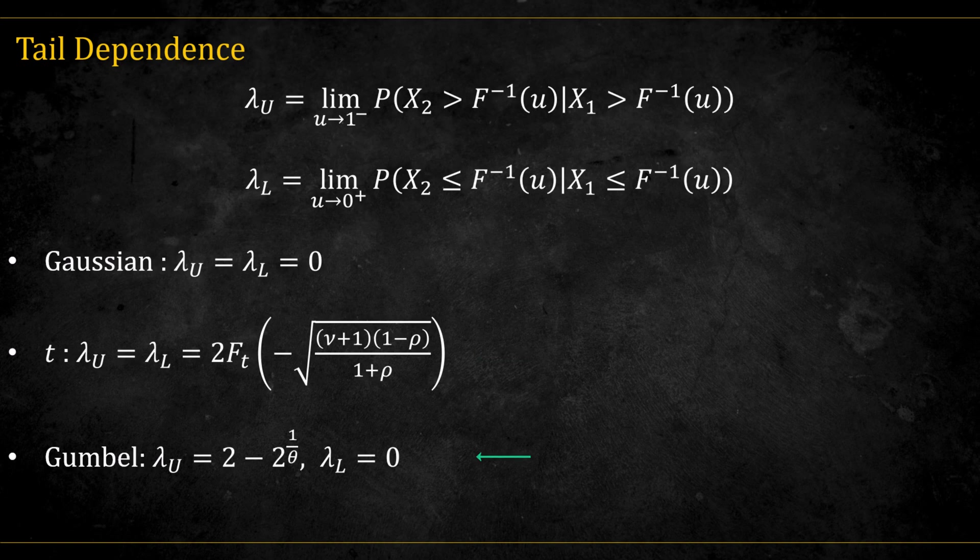The Gumbel copula shows upper tail dependence, but no lower tail dependence. So tail dependence quantifies how strongly variables move together in the extremes, something correlation alone completely misses.